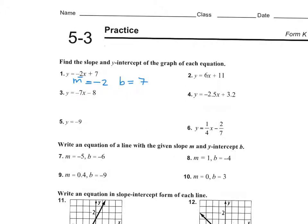How about number three? What's my slope on number three? Negative seven. What's my y-intercept? Negative eight, right? If you have a minus there, that's essentially a negative eight because it's saying plus a negative or minus a positive. So your b would be negative eight on that one.